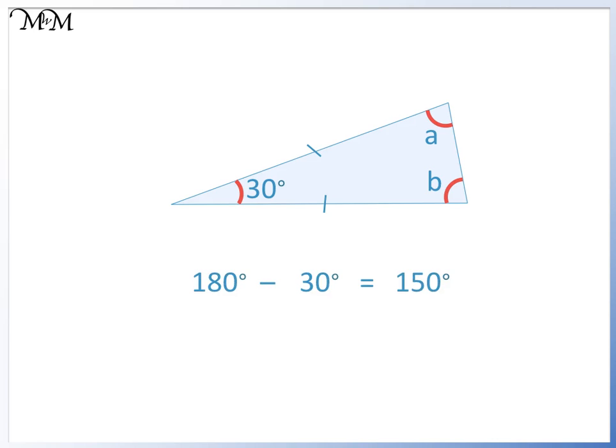a and b are the same size, so we can halve 150 to find their values. 150 divided by 2 equals 75, so a and b are both 75 degrees.